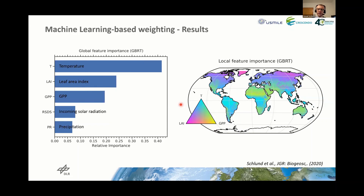We can also evaluate feature importance at a local grid cell level. Blue colors indicate regions where temperature is the dominant feature, yellow where GPP is most dominant, and pink where leaf area index is most dominant. We find that in high latitudes, leaf area index dominates the prediction, whereas in regions closer to the equator, temperature dominates.